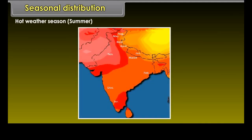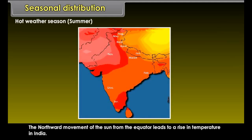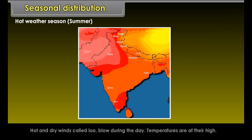During the hot weather summer season, the northward movement of the sun from the equator leads to a rise in temperature in India. Hot and dry winds called 'loo' blow during the day, and temperatures are at their highest.